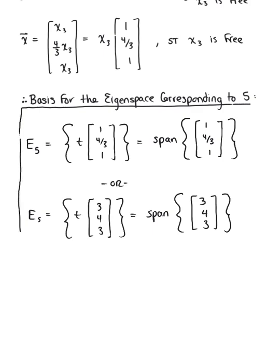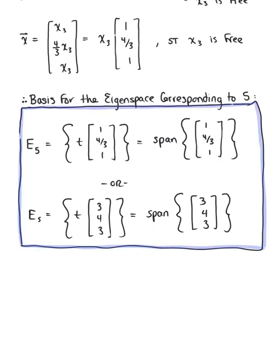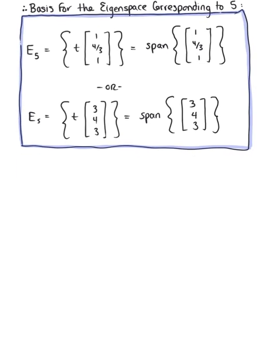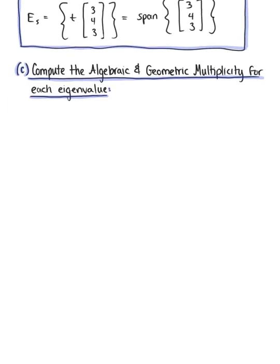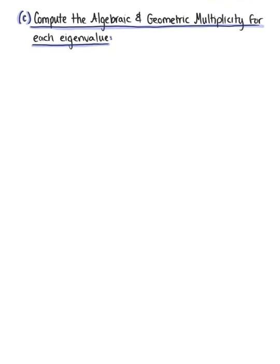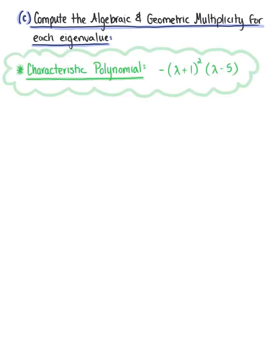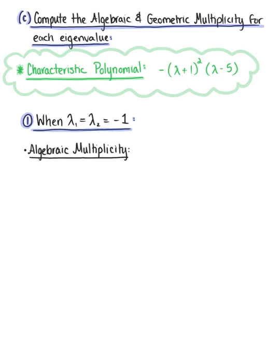We are now ready for the final part, part C, where we compute the algebraic and geometric multiplicity for each eigenvalue. Recalling our characteristic polynomial -(lambda+1)^2 (lambda-5), we have two cases. Case 1: lambda sub 1 equals lambda sub 2 equals negative 1. For the algebraic multiplicity, we ask how many times does each factor appear — the factor (lambda+1) appears twice, so this eigenvalue has an algebraic multiplicity of 2.